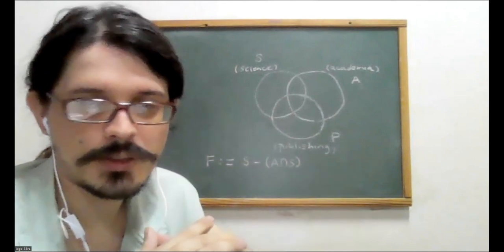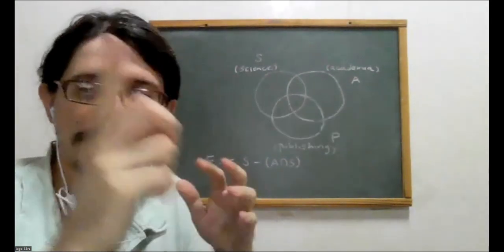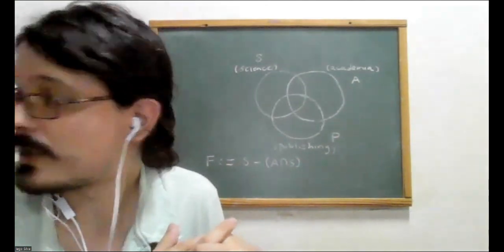When someone criticizes academia, they almost immediately sometimes come across as anti-science or denialists or contrarians or something like that. And this is very dangerous and very misleading. Of course, if we admit this possibility that science is something different than academia, then of course there is some overlap, but there's a region there that is non-overlapping.